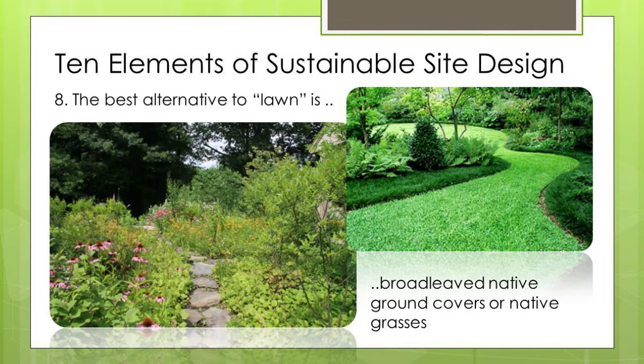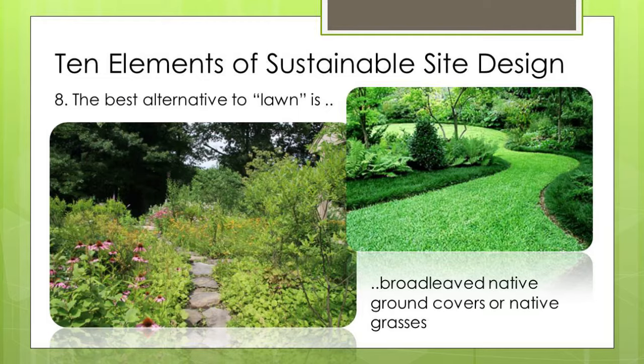Lawn alternatives are getting to be in a lot of demand — we have people calling every day wanting something alternative to turf grass. You have broadleaf native ground covers, or you can do some very low-profile native grasses. We've got buffalo grass, which is a warm season grass, and we have sold it up into the UP of Michigan. We also have no-mow fescue, which is a cool season grass, and you can get that just about anywhere. So again, alternatives to high-maintenance, fertilized, pesticide turf grass.